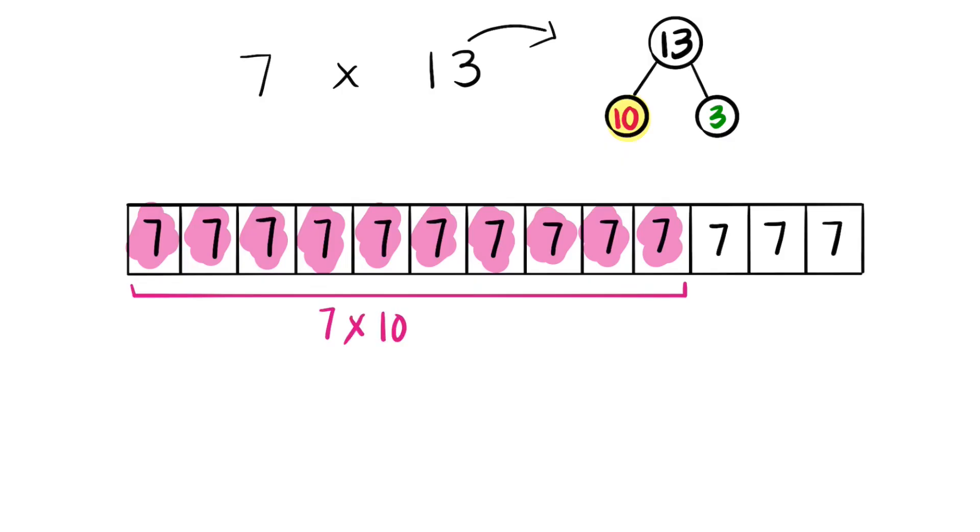Now remember we said 10 plus 3 makes 13. So far we have 10. Now we need to do the other 3. We have the last three 7s.